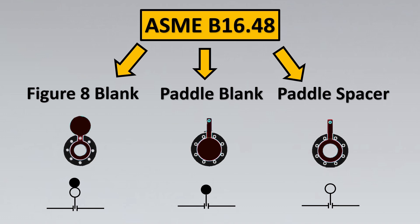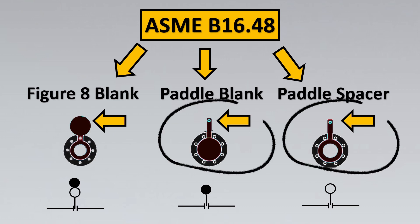Now another important differentiation is if you see on the top, these have indications to it. The indication is possible only in figure 8 blank, especially because if the solid portion is up, that means the hollow portion is basically down, which is allowing the flow and vice versa.